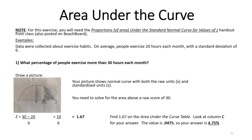Another concept for using z-scores is the area under the curve. For this exercise, you will need the proportions of area under the standard normal curve for values of z handout provided in class, also available on Beach Board. Our setting: data were collected about exercise habits, finding that on average people exercise 20 hours each month with a standard deviation of 6. The question is: what percentage of people exercise more than 30 hours each month?